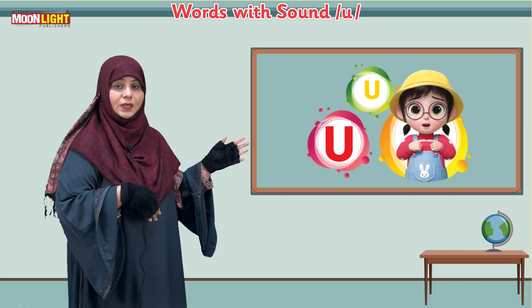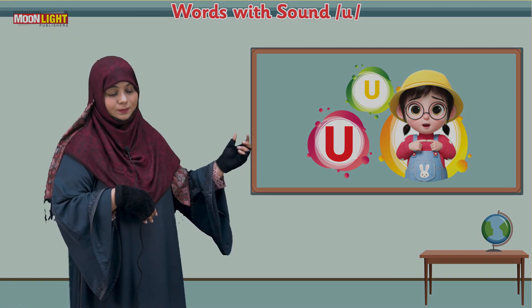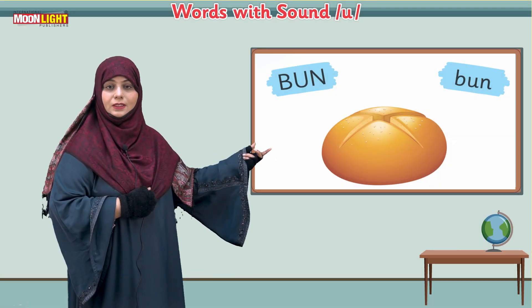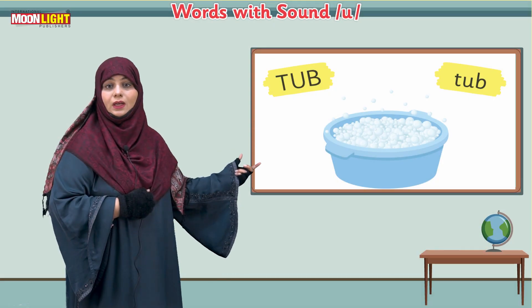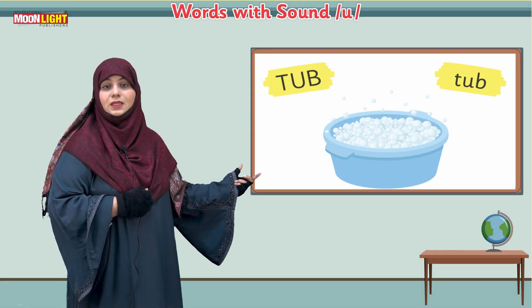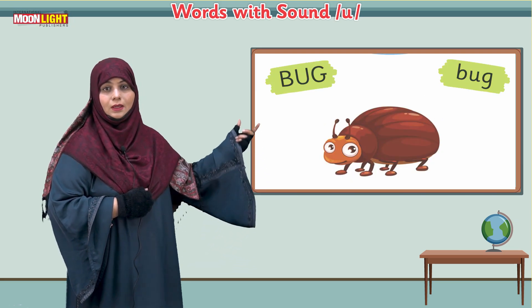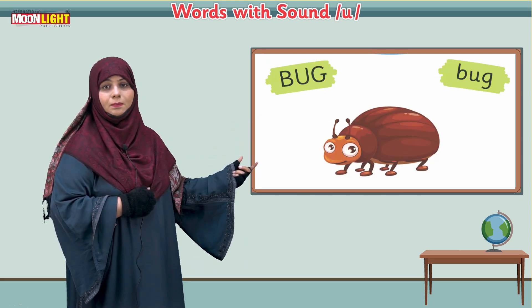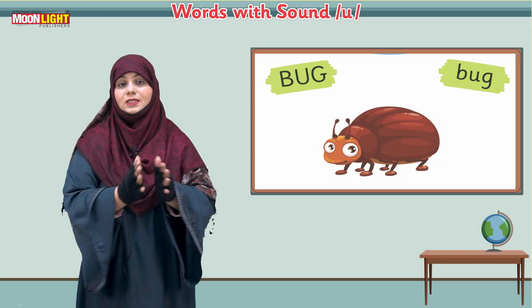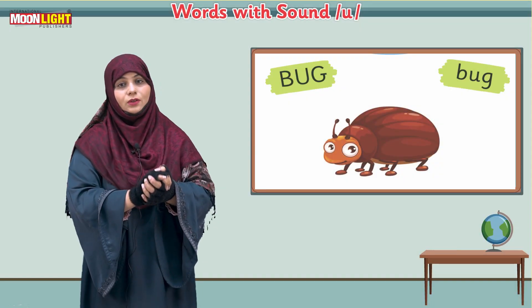First of all, look here and tell me the name of this picture. The names are written here: bun — this is bun, this is tub, and this is bug. Bun, tub, and bug — these are some words with the 'u' sound, and today we are going to make some words similarly.